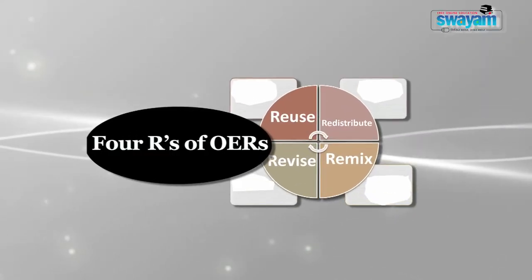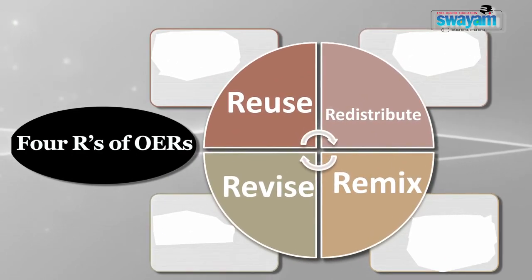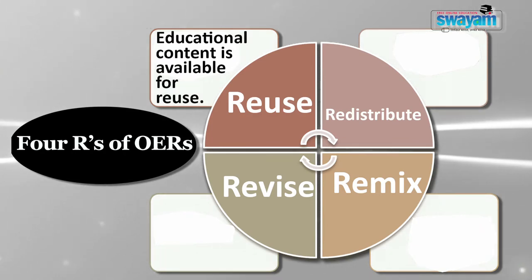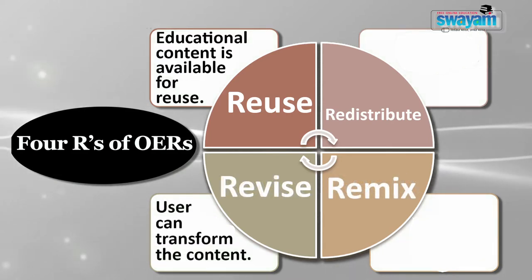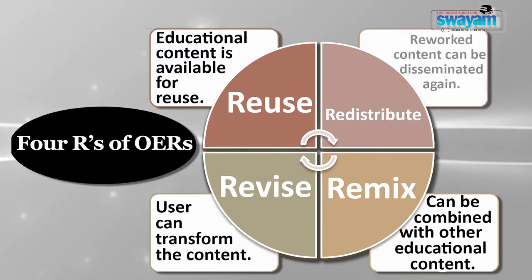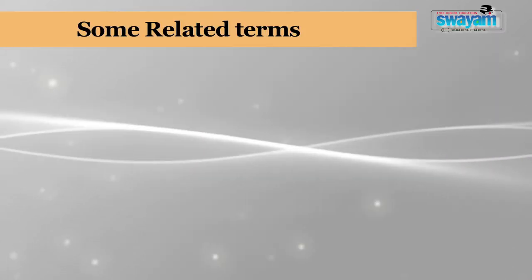As reuse and content sharing is a main feature of OERs, it is very important to give attention to the four R's of open educational resources. First is reuse — OERs assure easy access to content for reuse. Second is revise — OERs permit the user to transform the content. Third is remix — OER content can be combined with other content. And fourth is redistribute — the reworked content can be disseminated again.